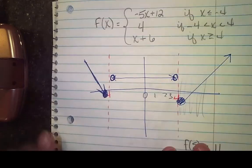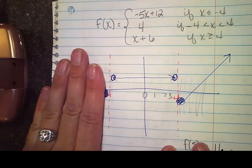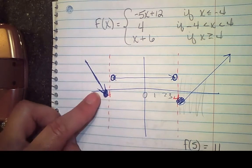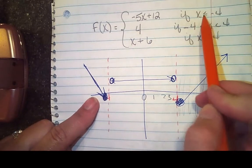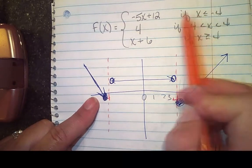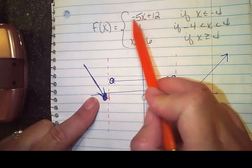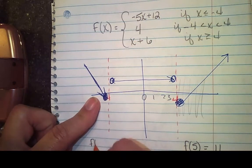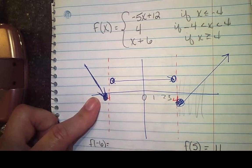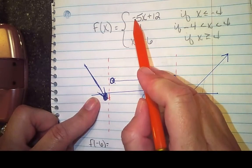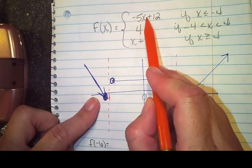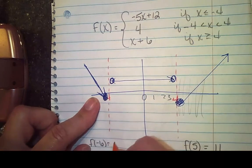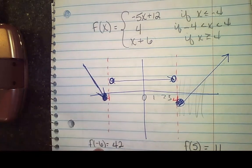The next one says f of negative 6. Where's the negative 6? Negative 6 is going to be over here, so that's the first part that we drew. We need x is less than or equal to negative 4, so it's going to be this part right here, and we're going to substitute in a negative 6. f of negative 6 gives us negative 5 times negative 6, which is 30, plus 12 is 42.